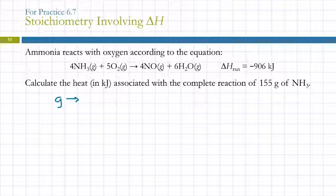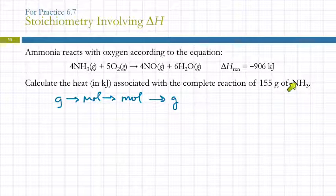So the general path for stoichiometry was grams to moles to moles to grams. Right? Here we've got a mass of ammonia. So we're starting with grams. Grams of ammonia. And then we're going to go to moles of ammonia. But what's nice about this, this relates directly to each of these terms. So we don't have to go from moles of ammonia to moles of something else. We can go from moles of ammonia directly to kilojoules. So we're not going to do that part or this part. We're going to go directly to kilojoules using this as our conversion factor.